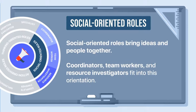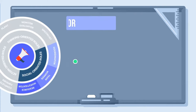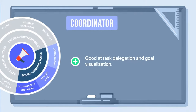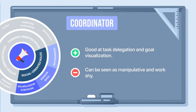Social-oriented roles bring ideas and people together. Coordinators, team workers, and resource investigators fit into this orientation. The coordinator is an asset as they have the ability to clearly visualize goals. They make great leaders and are excellent with task delegation. However, they may be seen as manipulative and work-shy because they may sometimes offload their share of the work.